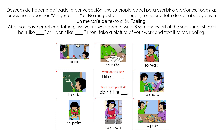After you have practiced talking, use your own paper to write eight sentences. All of the sentences should be I like blank or I don't like blank. Then take a picture of your work and text it to Mr. Ebling. I can't wait to see your work. Thank you and goodbye.